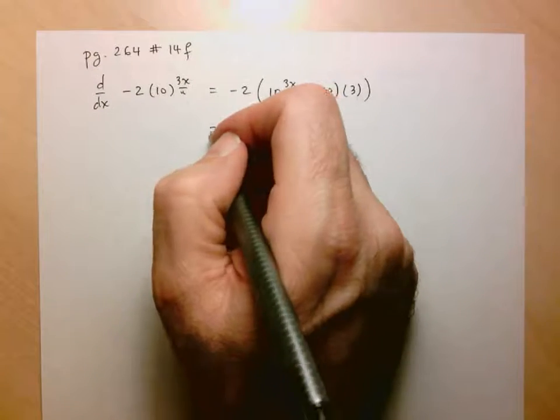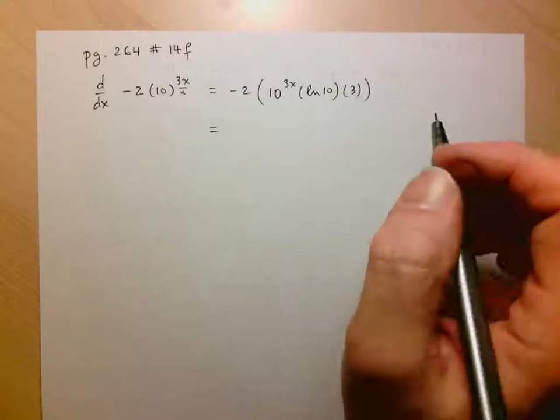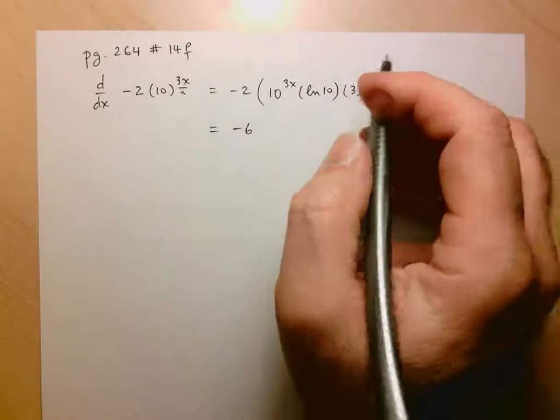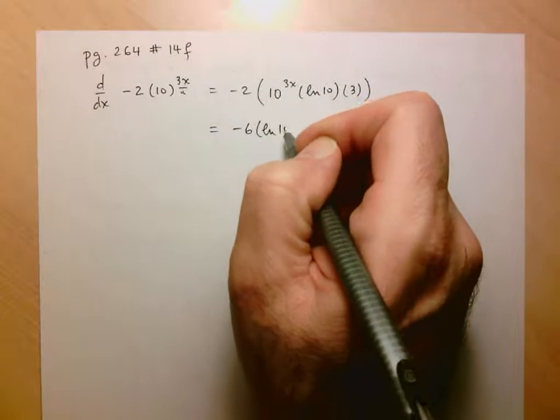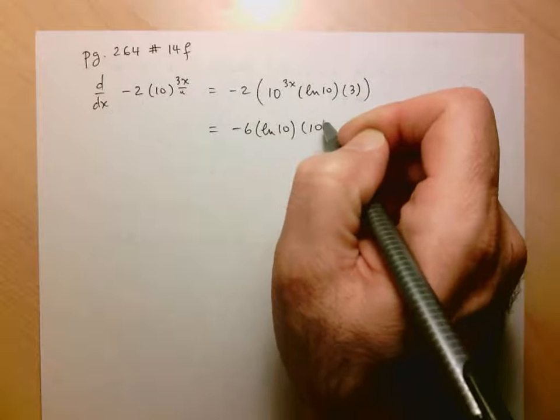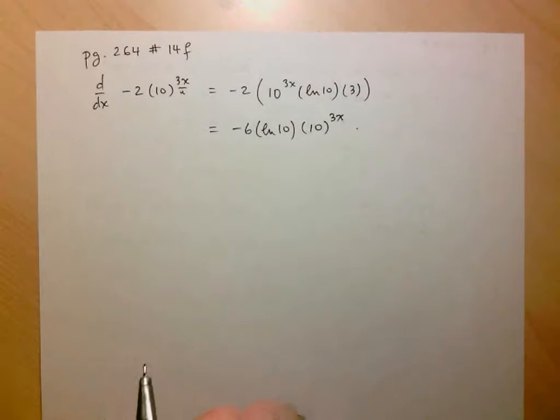And so, there we have it. If we want to simplify this a little, negative 2 times 3 is negative 6 times ln 10, times 10 to the 3x.